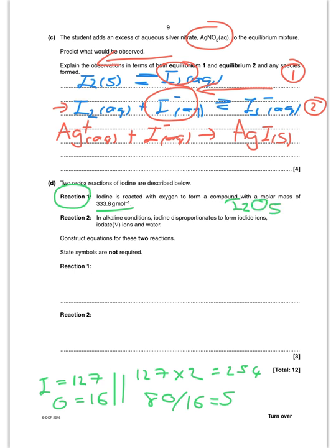So I have I₂ reacting with O₂ — both diatomic — to give I₂O₅. Balancing it: putting a 2 in front of I₂, a 5 in front of O₂, and a 2 in front of I₂O₅ makes everything balance nicely.